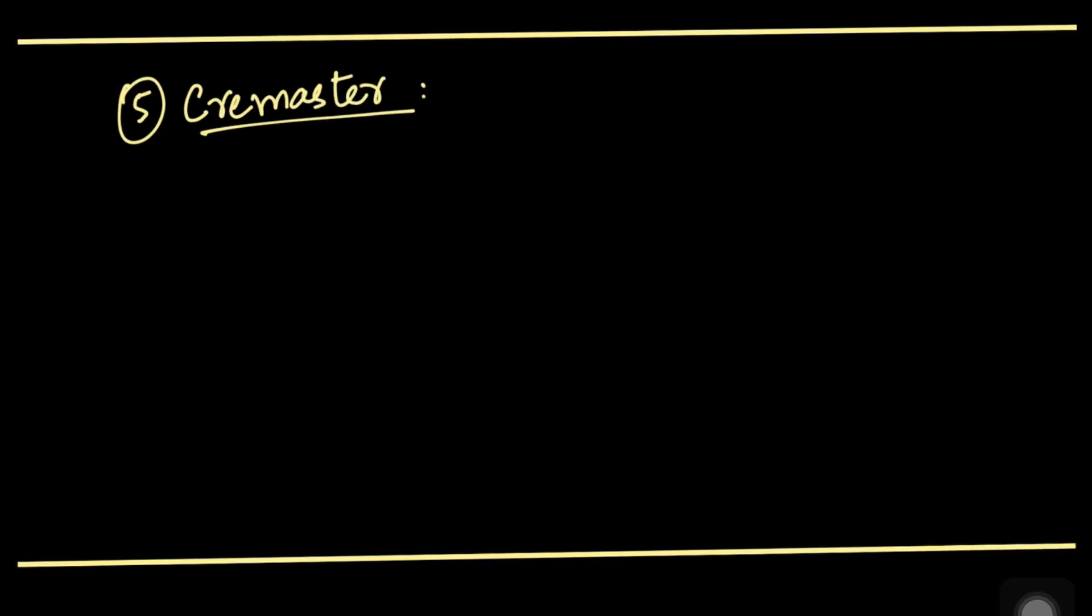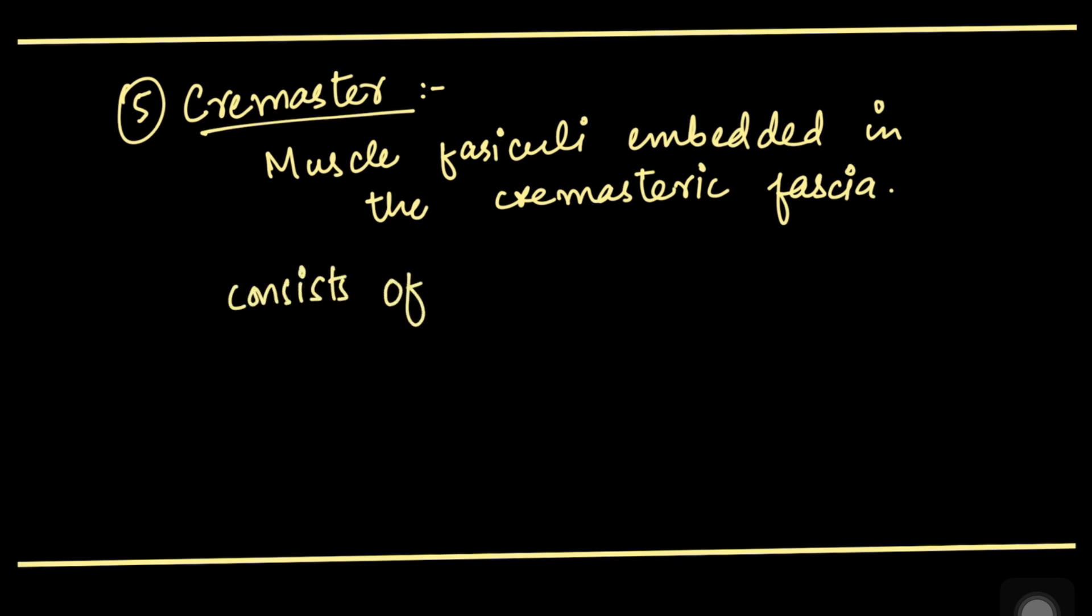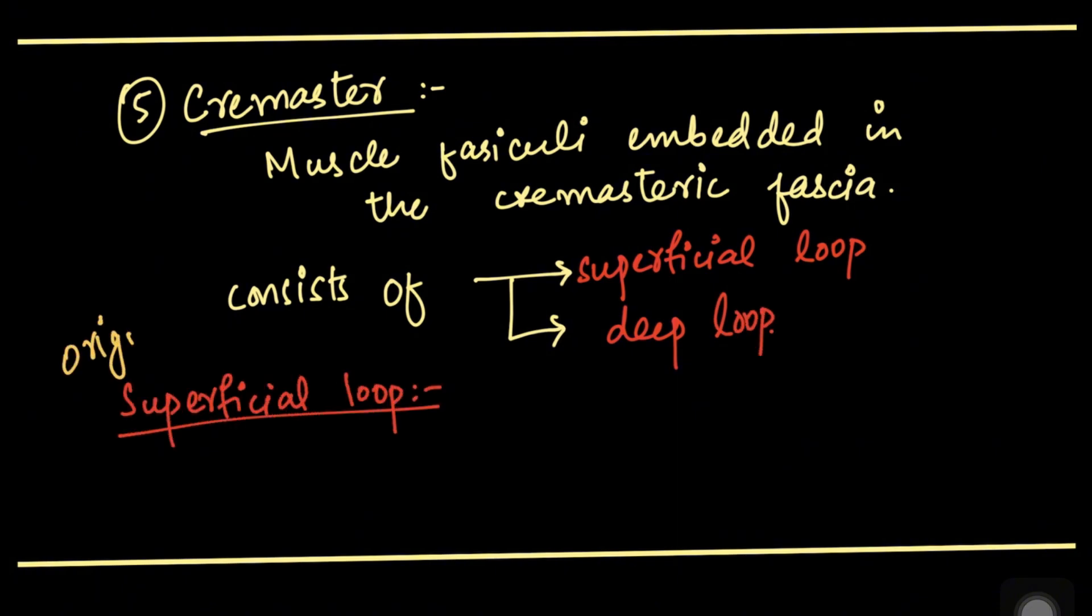The fifth muscle of the anterior abdominal wall is the cremaster muscle. The muscle fasciculi are embedded into the cremasteric fascia. The cremaster muscle consists of a superficial loop and a deep loop. The superficial loop originates from the middle one-third of the upper surface of the inguinal ligament.